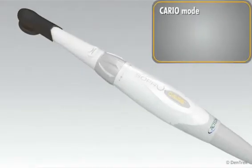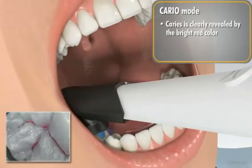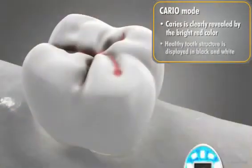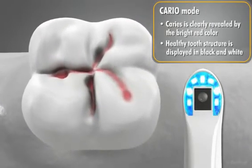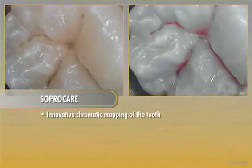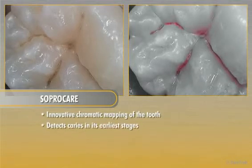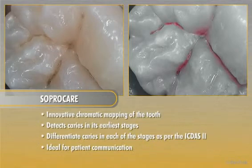In cario mode, enamel and dentinal caries is clearly revealed by the bright red color. Healthy surrounding tooth structure is displayed in black and white, drawing the clinician's focus only to the caries lesion. SoproCare's innovative chromatic mapping of the tooth allows the dental professional to detect caries in their earliest stages, differentiate them in each of the stages as per the ICDAS-2, and effectively communicate treatment plans and clinical procedures to the patient.